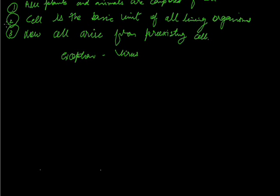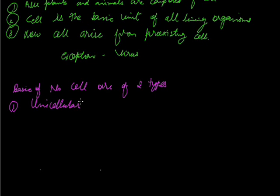Now on the basis of number, cells are of two types. First one is unicellular, means those organisms which contain only a single cell. While the second one is multicellular organisms, means those organisms which contain more than one cell.